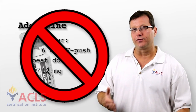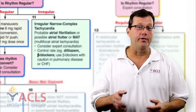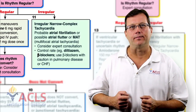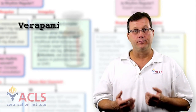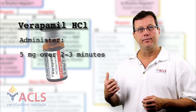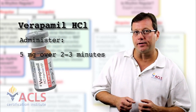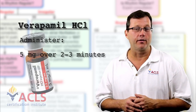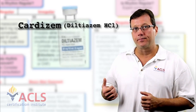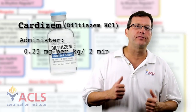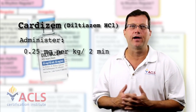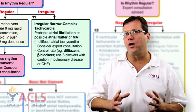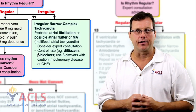So the drug of choice for a narrow-complex irregular tachycardia is a calcium channel blocker. A couple of options exist. One is verapamil, 5 milligrams, slow IV push over 5 minutes — some literature says over 2 minutes, but 5 over 5 is how I remember it. The second drug is cardizem, 0.25 milligrams per kilogram, again over 2 to 5 minutes. Both of these drugs are calcium channel blockers and are designed to help slow the ventricular response in these tachycardias.